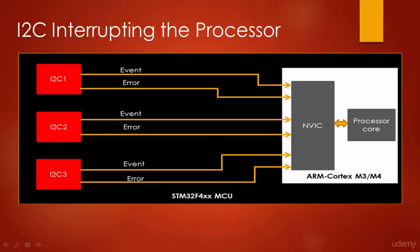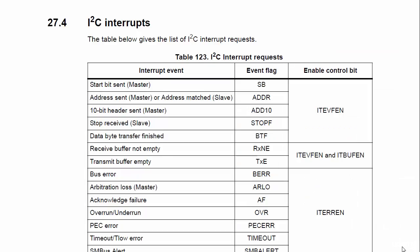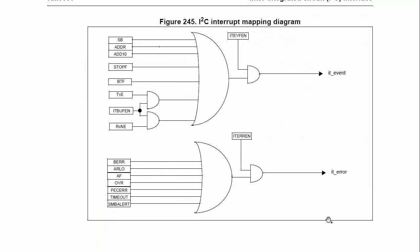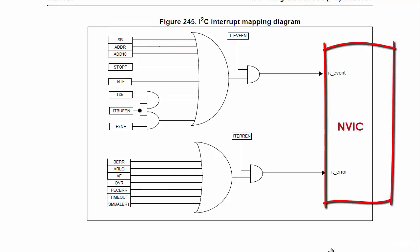If the microcontroller is based on an ARM Cortex-M4 processor, this diagram clarifies that the I2C peripheral is capable of producing two interrupts. These two lines go all the way to the NVIC block of the processor — one interrupt is for I2C events and the other is for I2C errors.